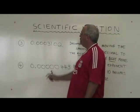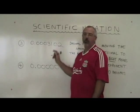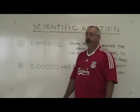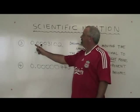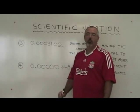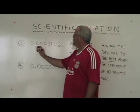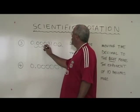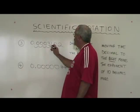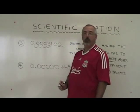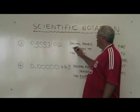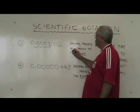In example three, we have a very small number instead of a very large number. We have to do the same thing. We have to move the decimal so that there is only one non-zero digit to the left of the decimal. That means I'm moving it one, two, three, four spaces to the right. So here I write decimal moves four spaces to the right.